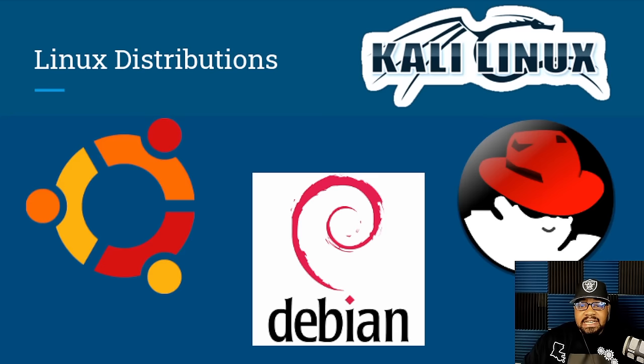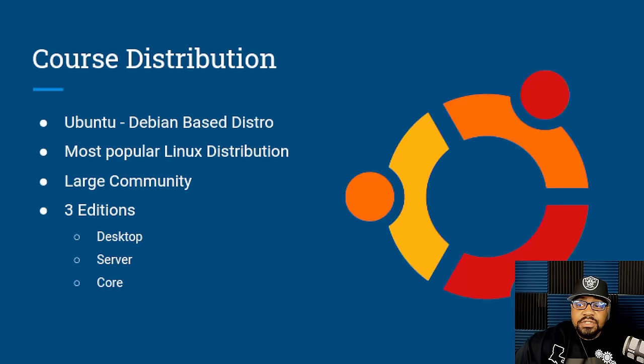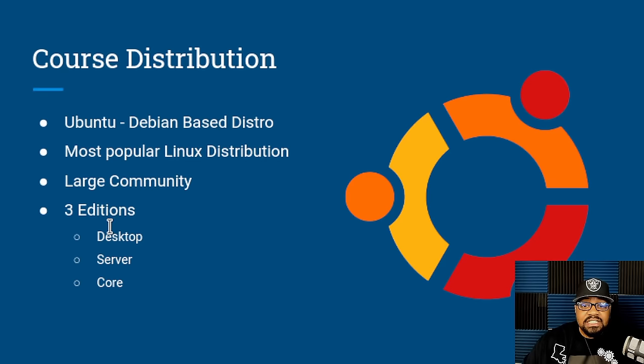The course will use Ubuntu throughout. It is Debian-based, composed mostly of free and open-source software, and released in three editions: desktop, server, and core (for IoT devices and robots). All editions can run on a computer alone or in a virtual machine, which is why Ubuntu was chosen — so students can follow along regardless of their hardware.